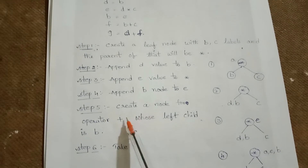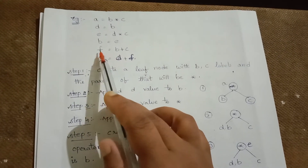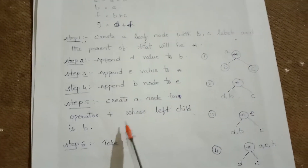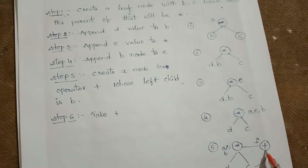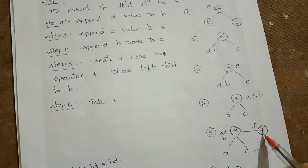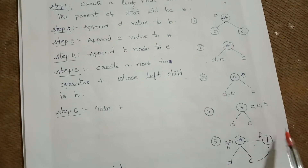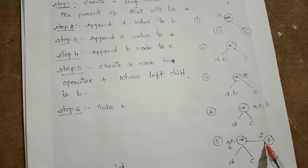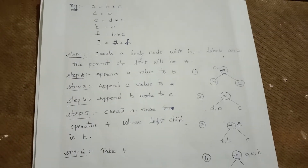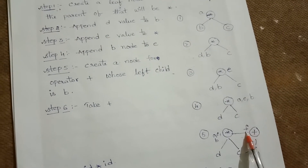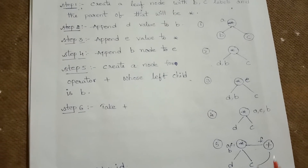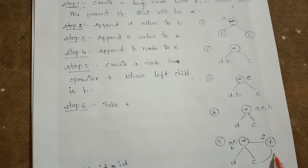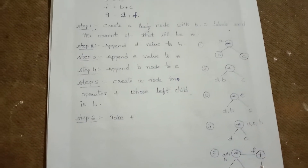In step five, F = B + C. We create a node for operator plus whose left child is B and right child is C, to represent the expression F = B + C. For this same tree, we are appending the operators and operands.